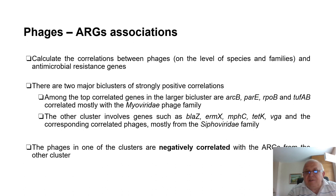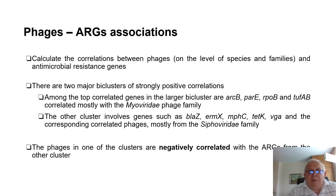Regarding phage and antimicrobial resistance gene associations, we confirm high correlation between phages and antimicrobial resistant genes, and we can define two major bi-clusters of strongly positive correlations. Among the top correlations, the larger bi-cluster is correlated mostly with the Myoviridae phage family, and the other cluster involves genes also correlated, to a lesser extent, with the Siphoviridae phage family.